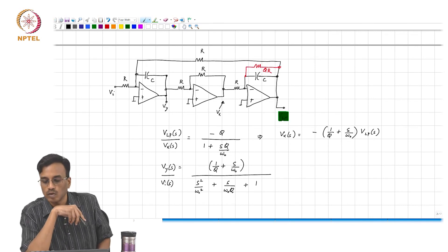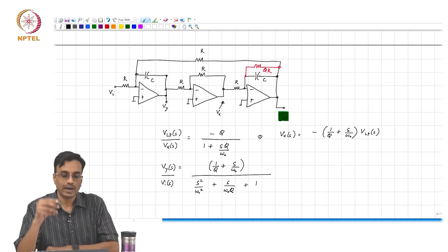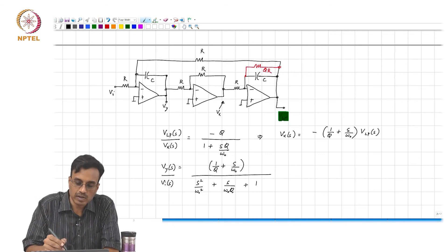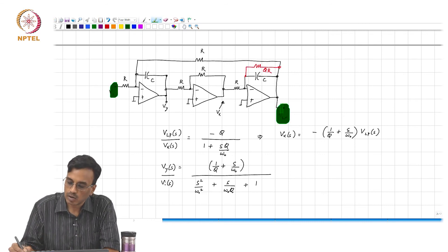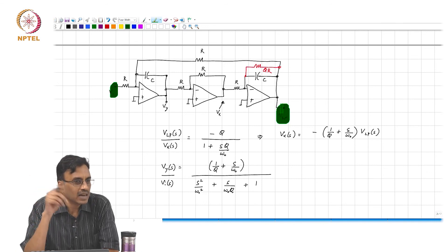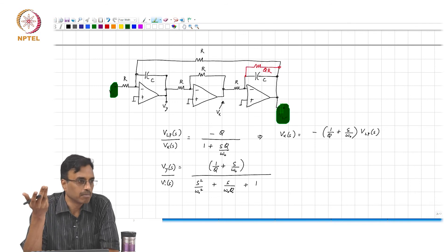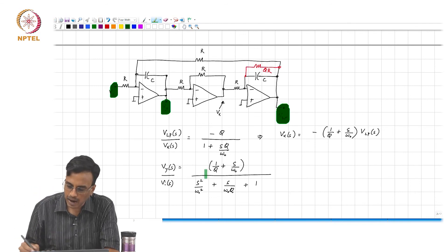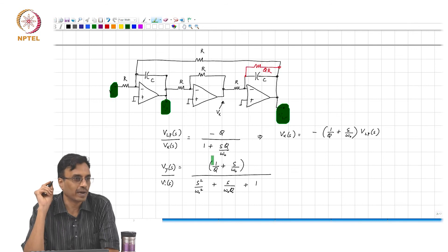So the question is, while it is true that the transfer function from here to the output, when we change the position of the damping resistor, remains the same, the internal transfer functions do not remain the same. So this is no longer a pure band pass, there is some other, there is a low pass component also.